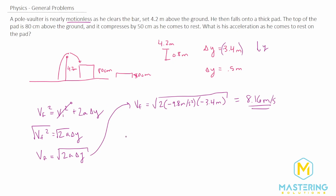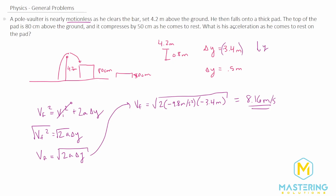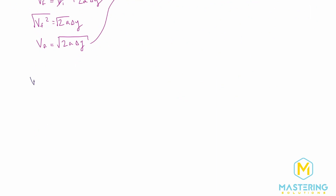We'll take that 8.16 m/s as the initial velocity for when he hits the pad and starts to compress it. What we're trying to find is the acceleration as he comes to rest on the pad. Using the same equation — v_final² = v_initial² + 2a·Δy — the final velocity is zero because he comes to rest. So we rearrange: negative v_initial² = 2a·Δy.